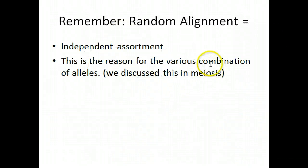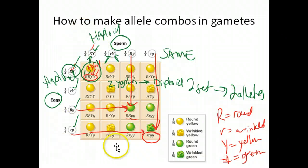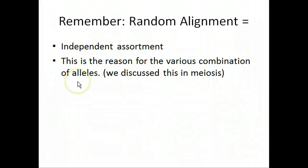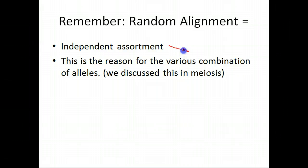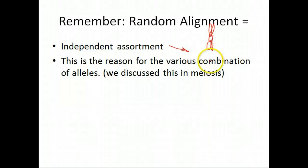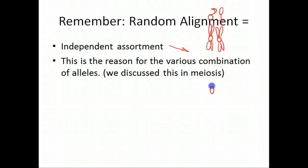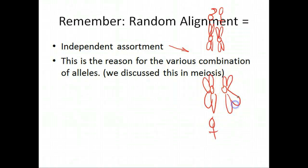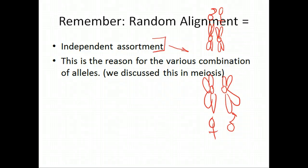The reason we get all these different combinations — and why we need such a big Punnett square — is that when there are two different genes with multiple alleles, you get different combinations. Think back to metaphase, when chromosomes are aligning at the plate: it depends on whether the chromosome from dad or from mom ends up on each side, and anything is possible because random alignment happens different ways. This random assortment leads to all these different combinations, which we'll continue next time.